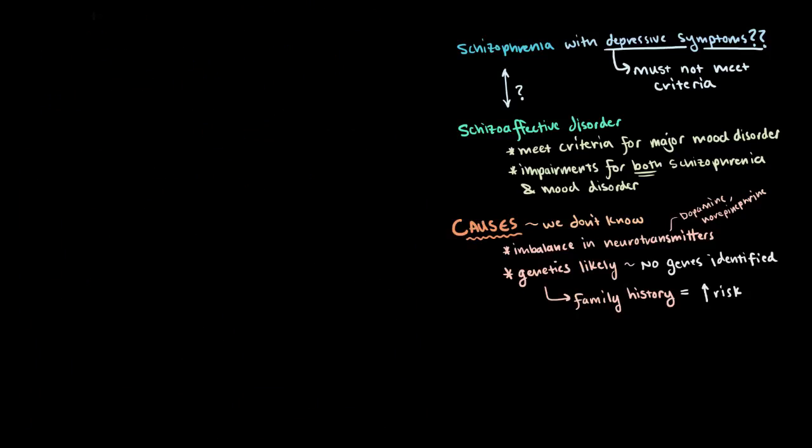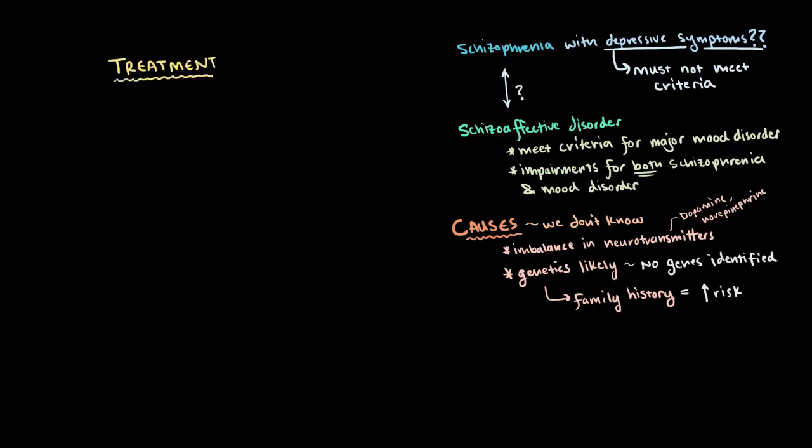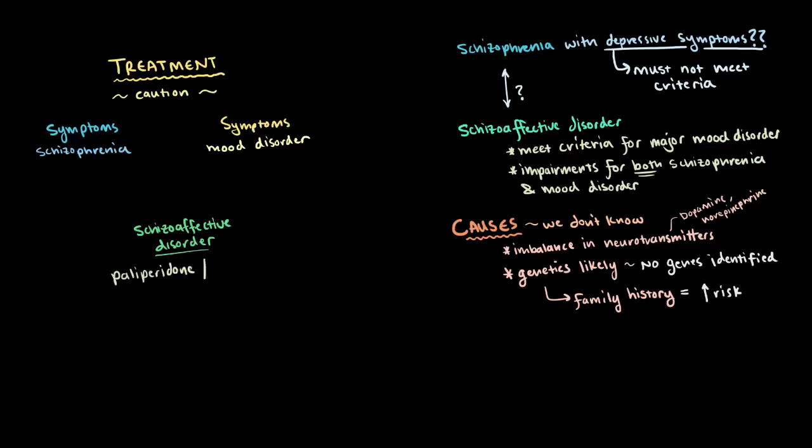When we're treating schizoaffective disorder, we're usually going to use medications, but we need to be careful because now there's both symptoms of schizophrenia and mood disorders. Currently, there's only one antipsychotic drug that's been approved by the FDA for treatment of schizoaffective disorder specifically, and it's called paliperidone, or Invega. But there are other antipsychotics that may be used as well to target symptoms of schizophrenia and help manage psychotic symptoms.